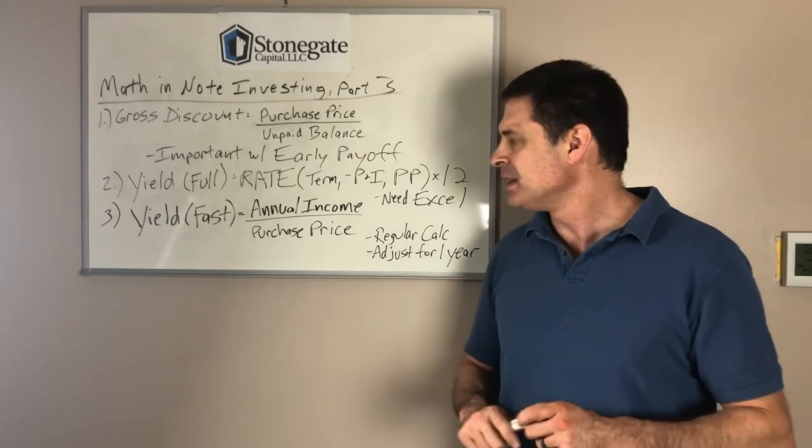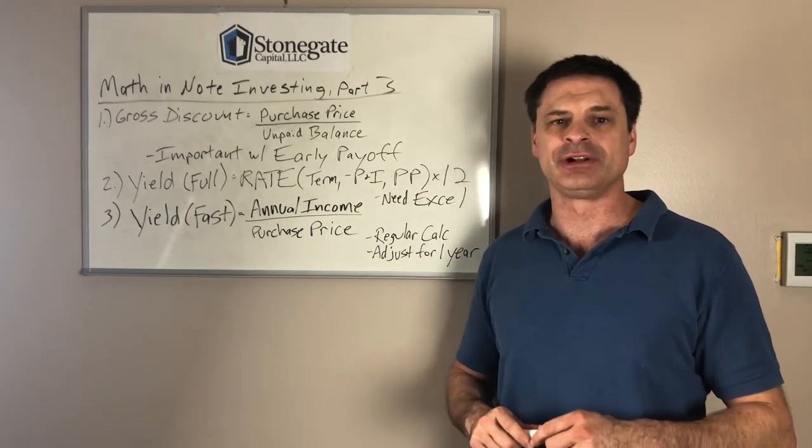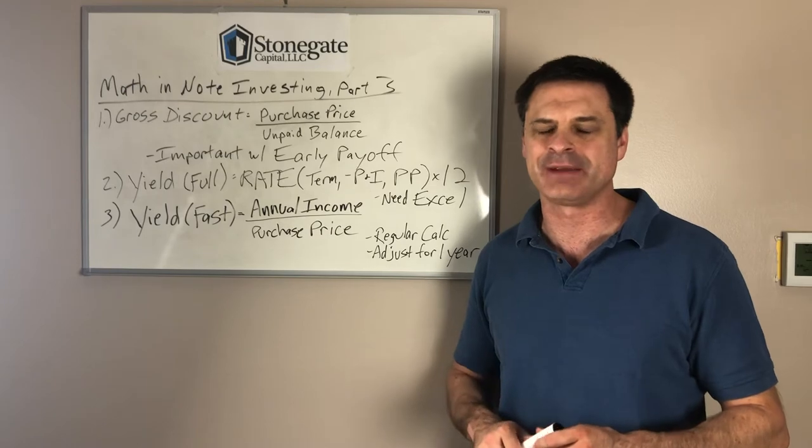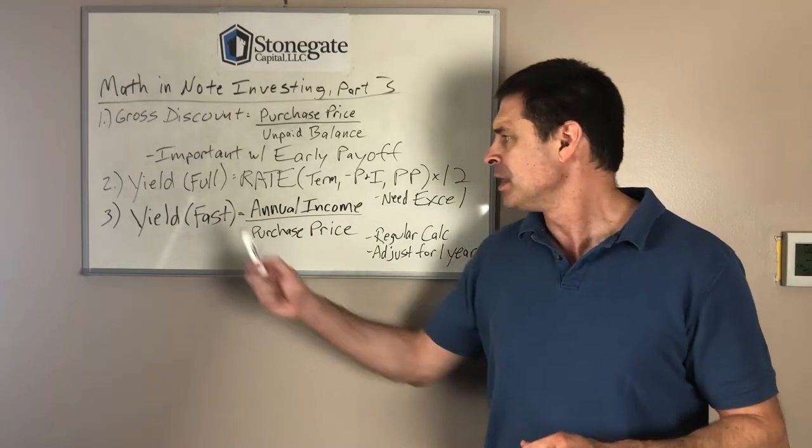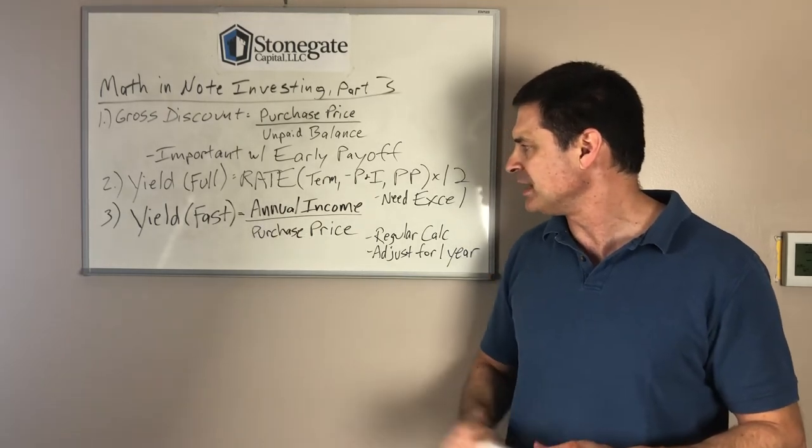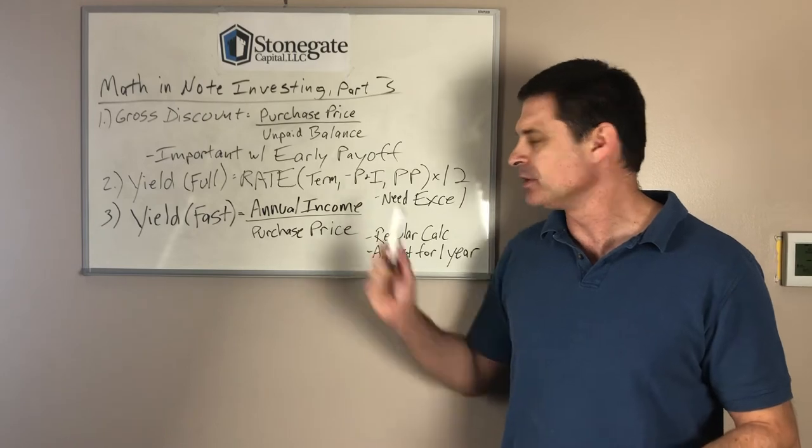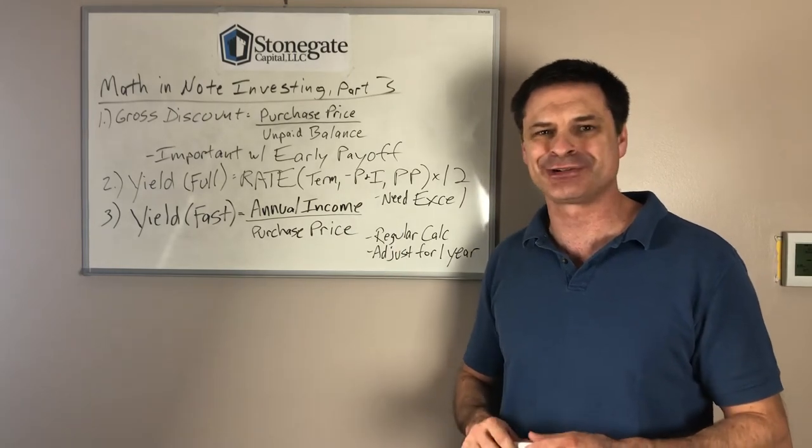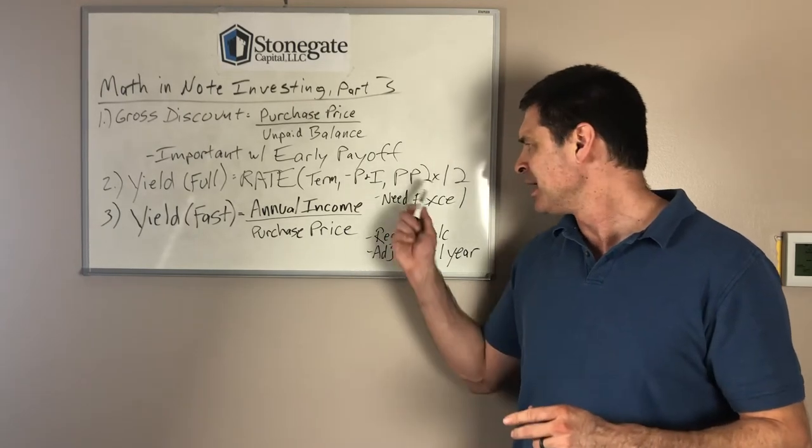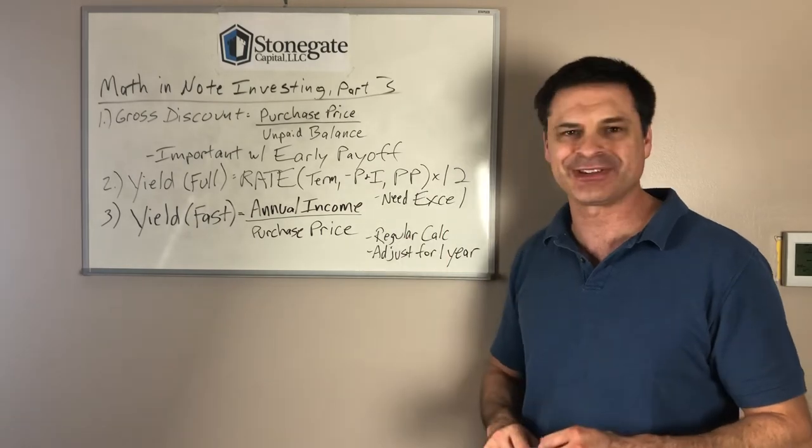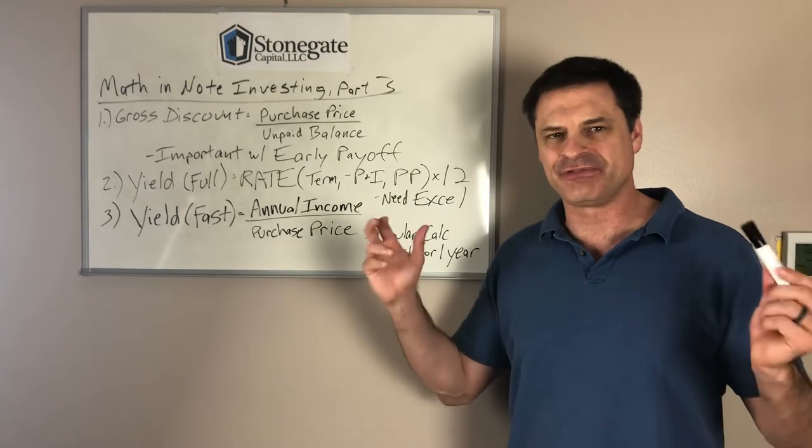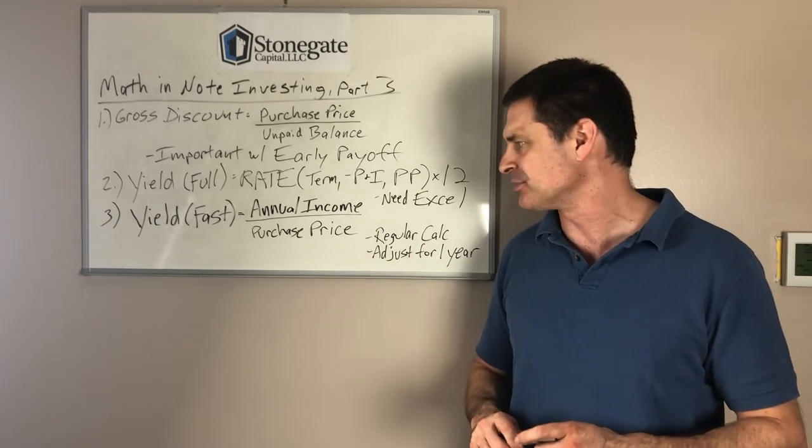The next thing I look at here is obviously the yield. I want to know what my return on investment will be, my yield. They're not exactly the same thing, but that's another story. But the way you would calculate that with Microsoft Excel is typing the word RATE, parenthesis, term, comma, your negative principal and interest, or whatever payments it is you're getting. It's negative because of the mathematical formula there. And comma, the purchase price, end parenthesis, times 12. So that all sounds well and good. That is kind of the full exact yield calculation with that.